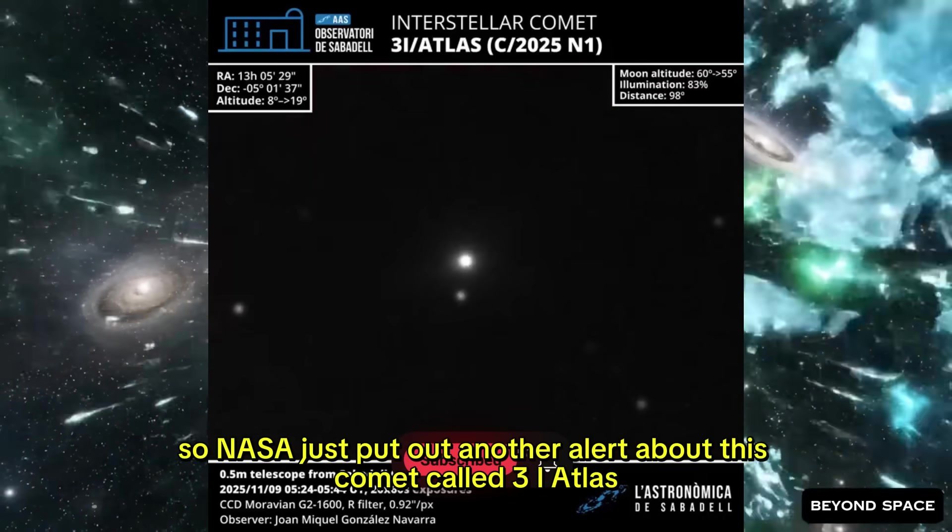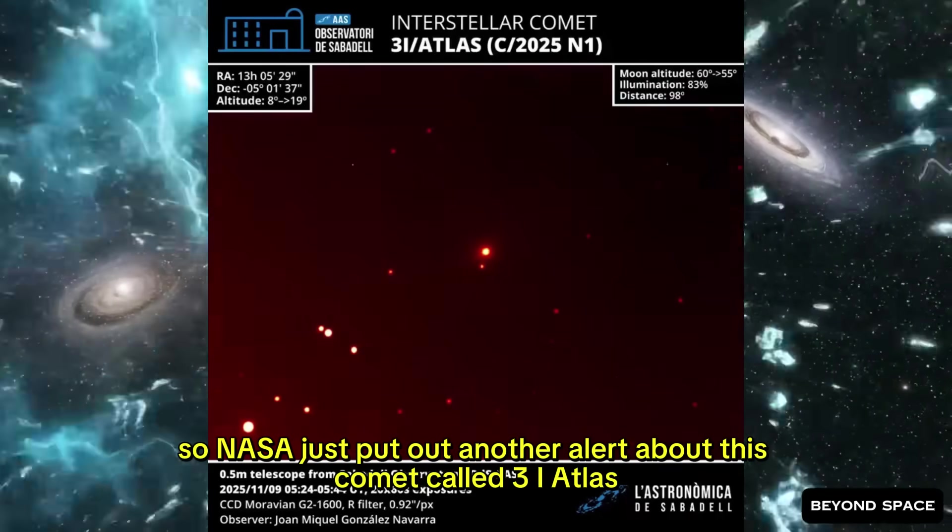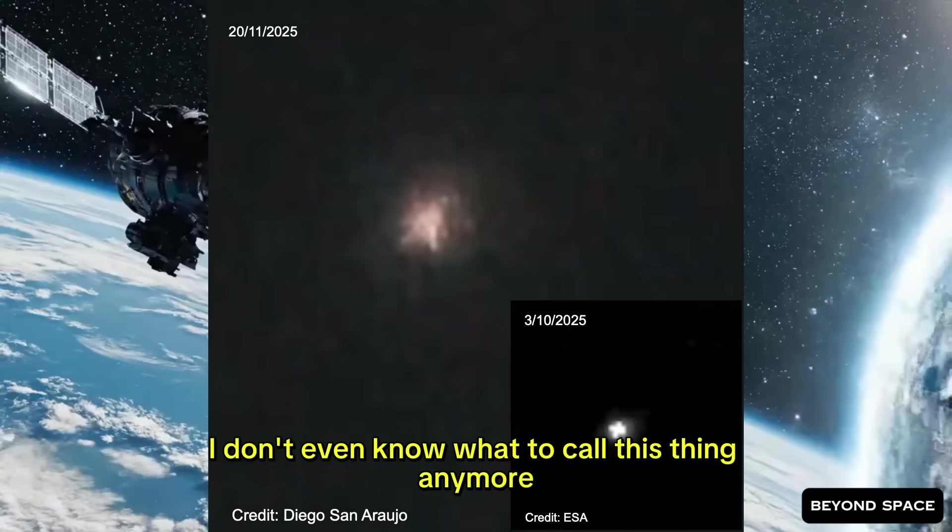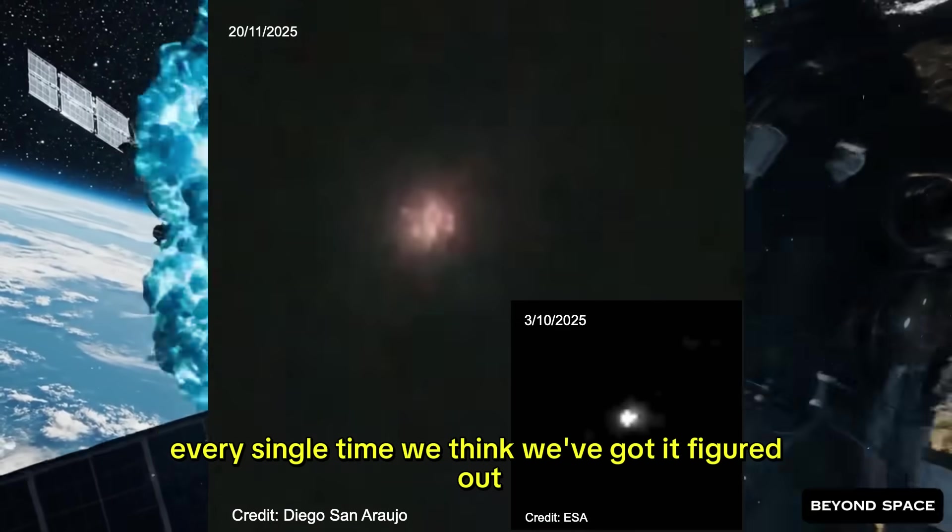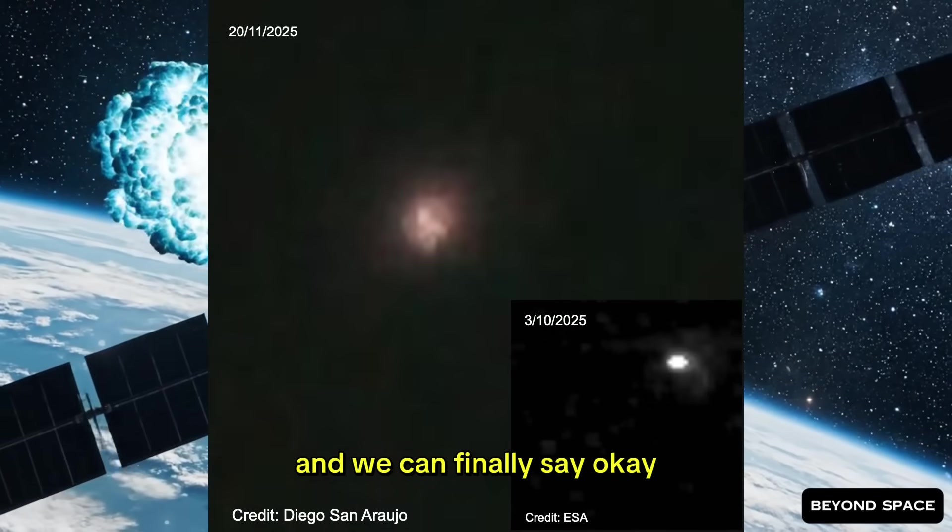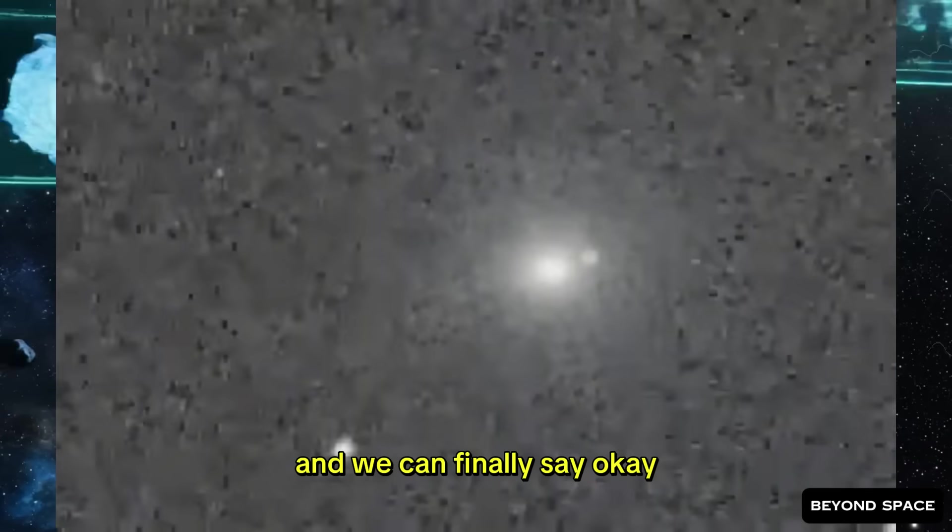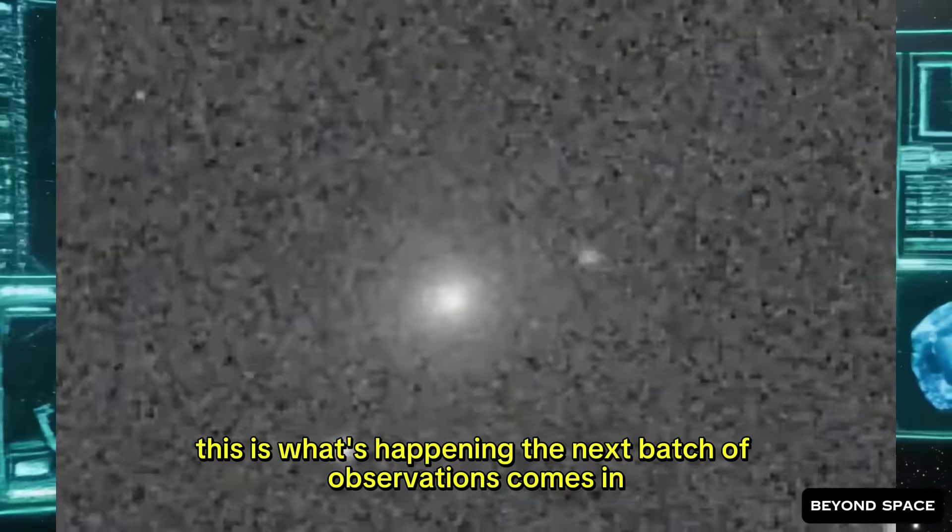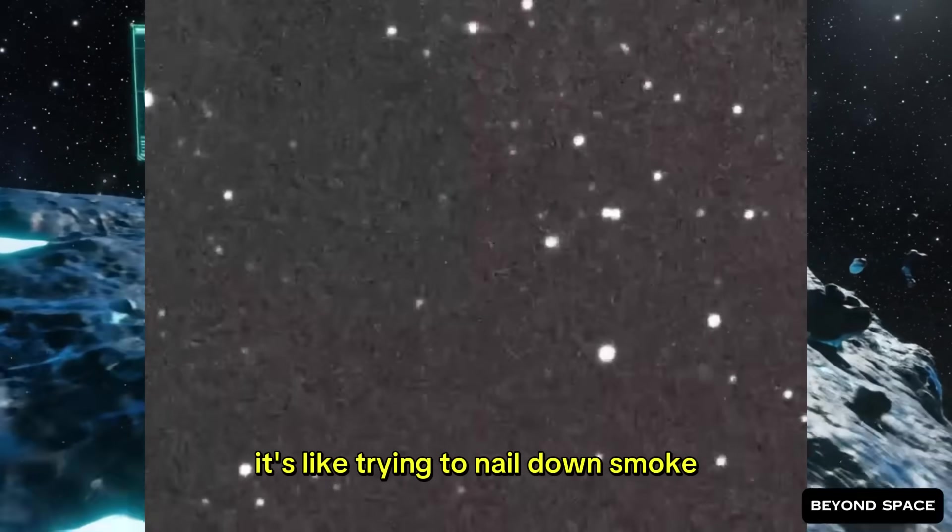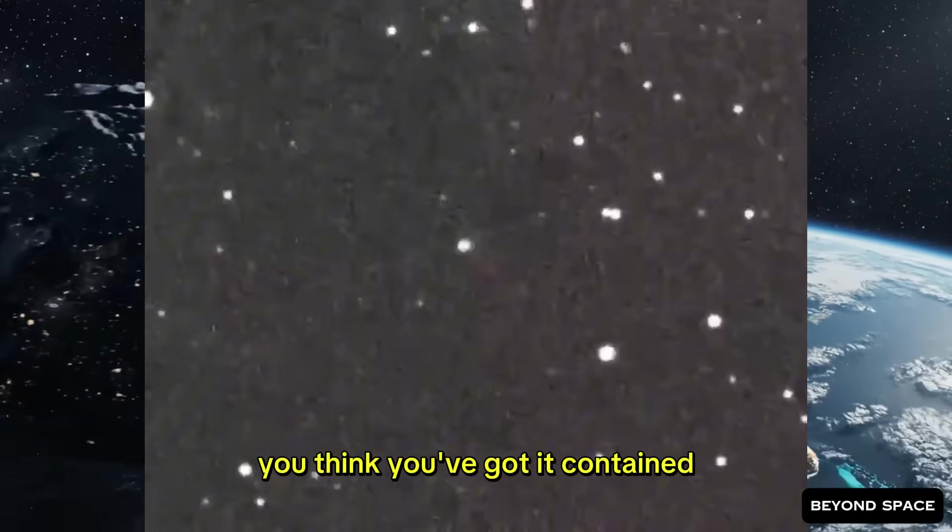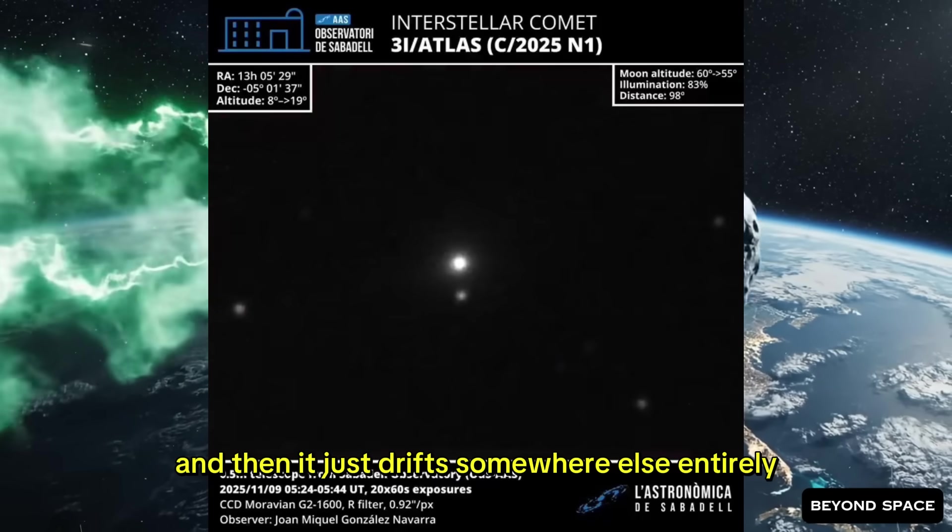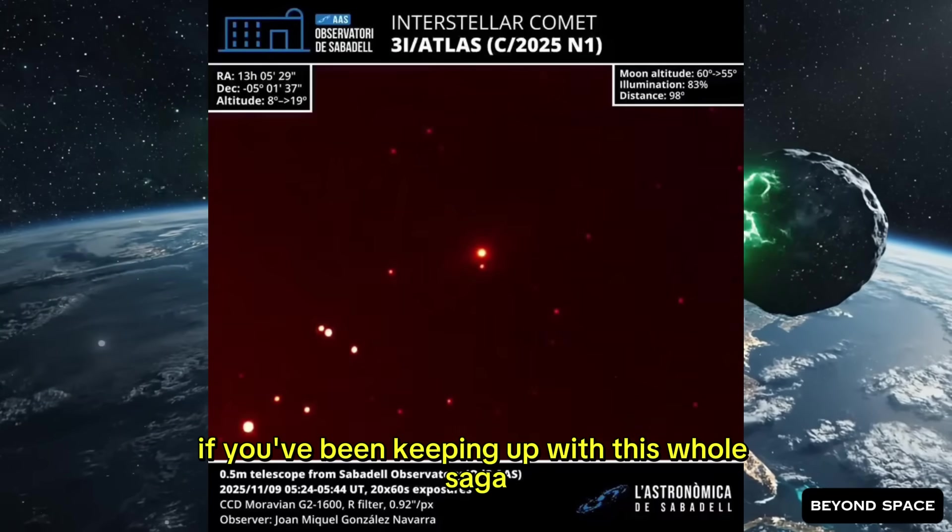NASA just put out another alert about this comet called 3i Atlas. And honestly, at this point, I don't even know what to call this thing anymore. Every single time we think we've got it figured out, every time the data starts making sense, the next batch of observations comes in and throws everything sideways again. It's like trying to nail down smoke.